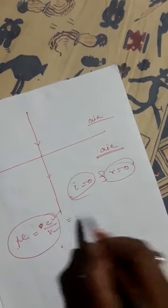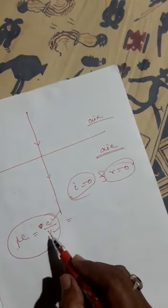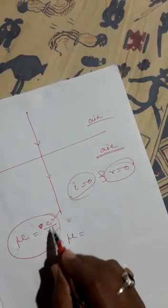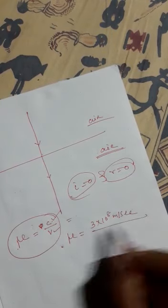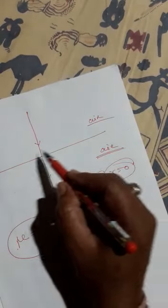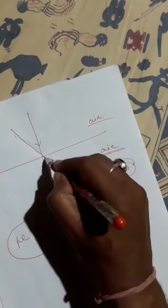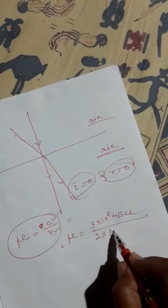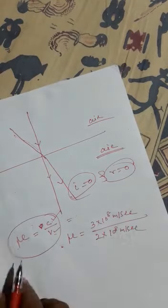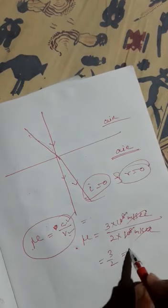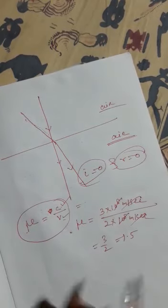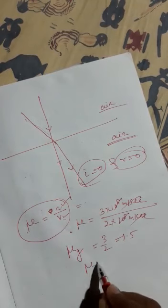For example, refractive index of glass: speed of light in vacuum is 3×10⁸ meter per second, and speed of light in glass is 2×10⁸ meter per second. Light travels from air to glass. Putting in the values, 10⁸ cancels, giving 3 by 2, which equals 1.5. So refractive index of glass equals 1.5.